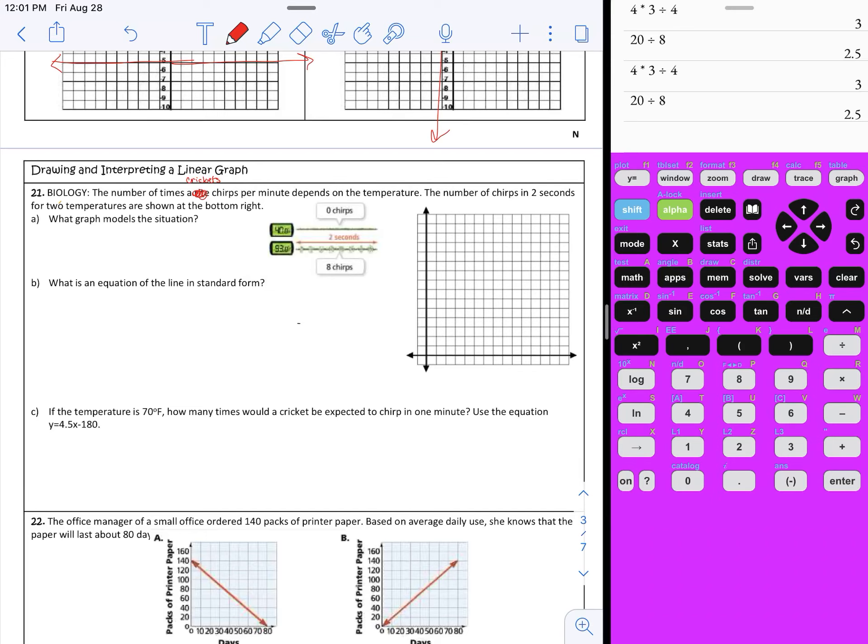The problem is that's in two seconds, so we have to multiply our number of chirps by 30 because there are 30 two-second intervals in a minute. If there are zero chirps in two seconds at 40 degrees, there would be zero chirps in 60 seconds too. Eight chirps in two seconds, multiply that by 30, that's going to be 240 chirps in 60 seconds. So if it's 93 degrees we're going to hear 240 chirps in a minute. The number of times they chirp is dependent upon the temperature, that makes the temperature x and the chirps y.